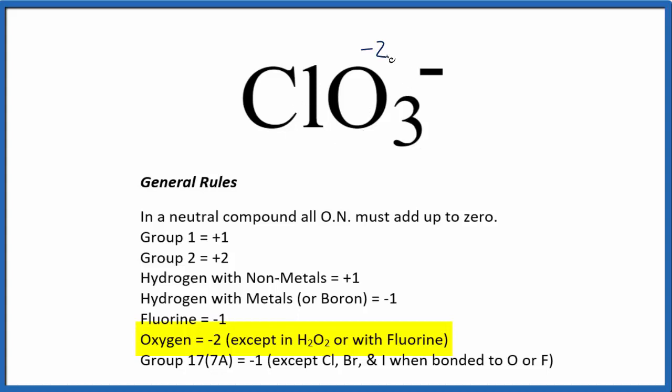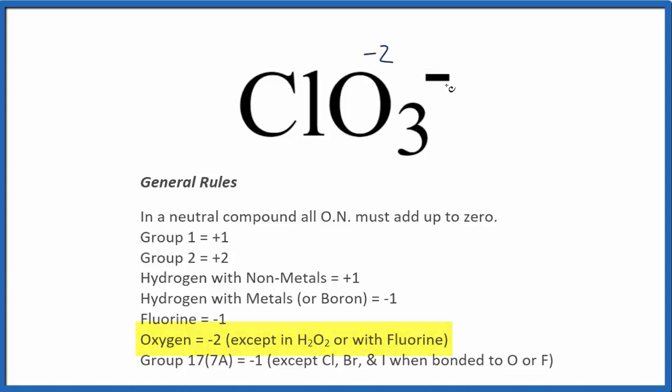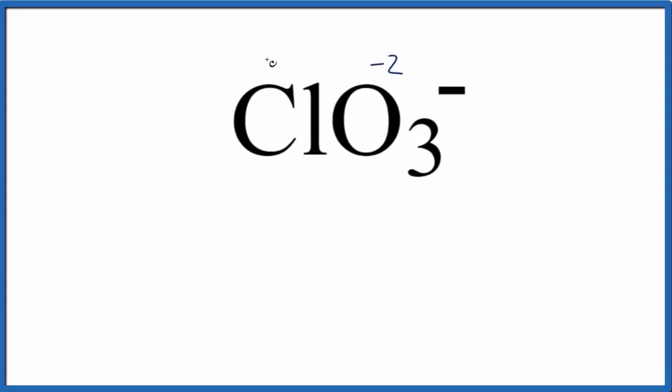So three times minus two, that gives us a minus six. So some number plus minus six gives us a minus one. If we add five, a plus five, to minus six, that'll give us a minus one. And that makes the oxidation number for Cl a plus five.